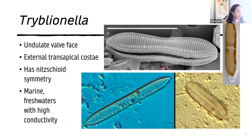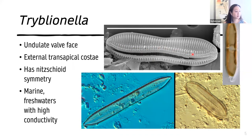Here is Tryblionella. It also has Nitzschioid symmetry like Nitzschia, but it has an undulate valve face — you can see that in this SEM. It also has transapical striae on the external surface of the valve, which are these thick rib-like structures called costae. These are often found in marine waters or fresh waters with higher conductivity.